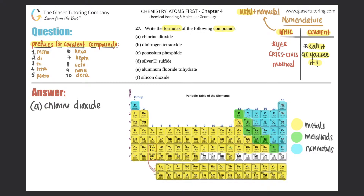They tell me I just have chlorine — no prefix like di, tri, or tetra — which means there's only one chlorine, so I write Cl. Then dioxide: di means two, so I have two oxygens. Therefore the formula is ClO₂. That's it for part A.